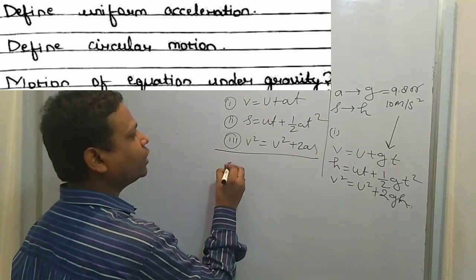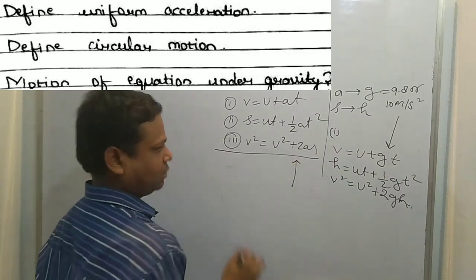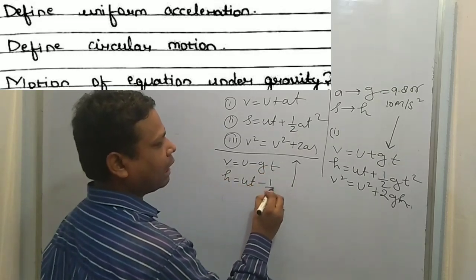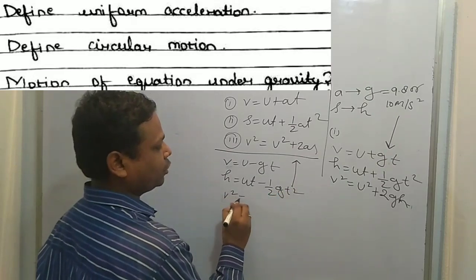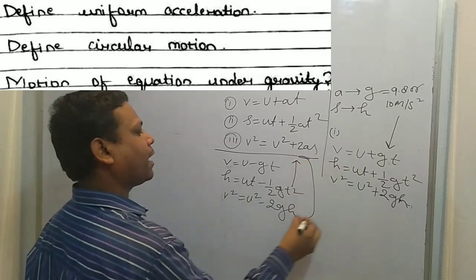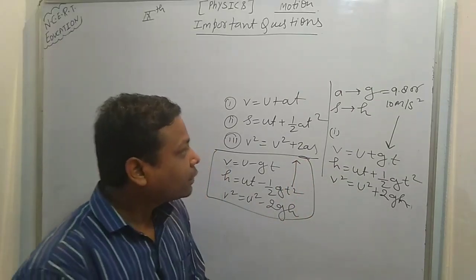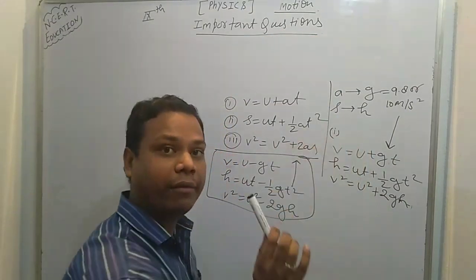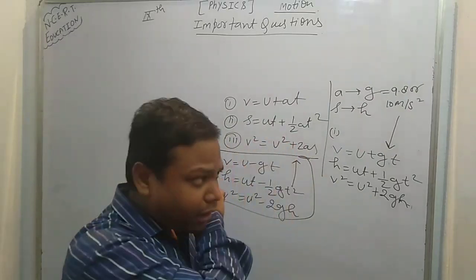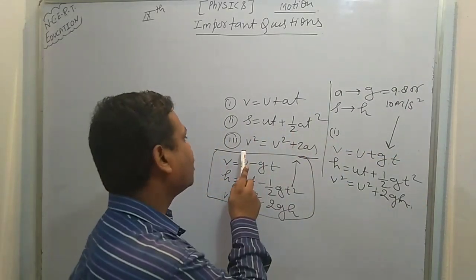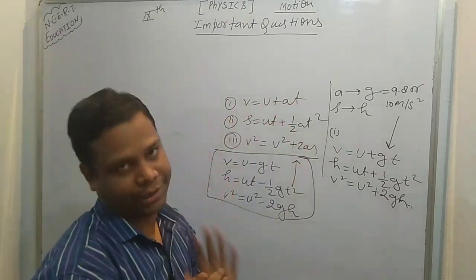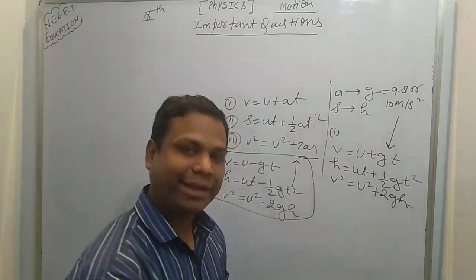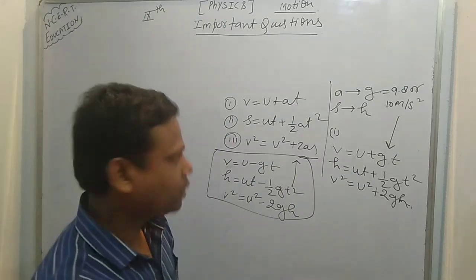If the object goes in the upward direction, the equations become: v = u − gt, h = ut − ½gt², and v² = u² − 2gh. In summary, 'a' is used when an object moves in a linear path, while 'g' is used when an object moves vertically upward or vertically downward.